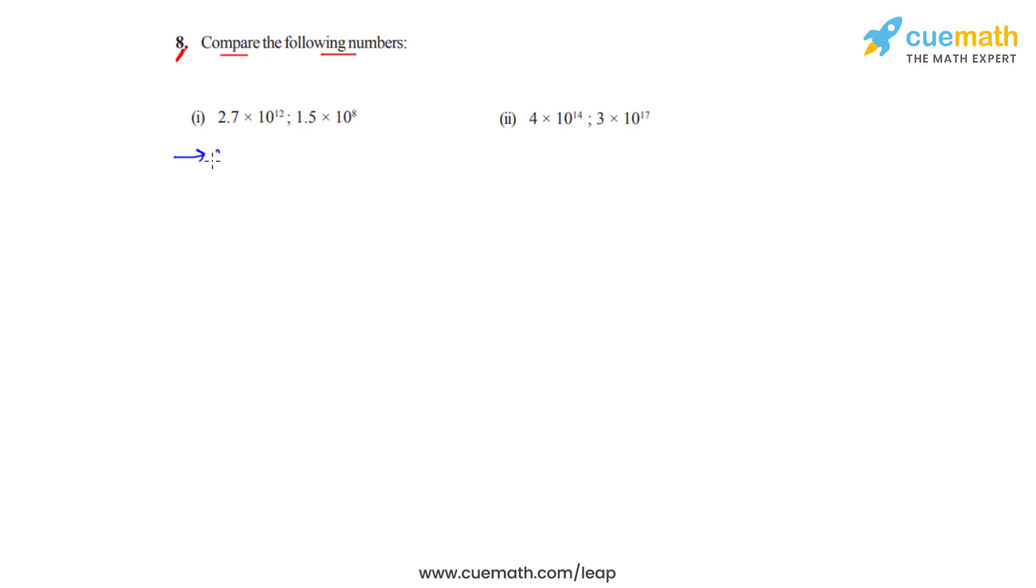In the first part we have 2.7 times 10 raised to 12. The power of 10 is a positive 12, so the decimal which is between 2 and 7 will move 12 places towards right. So we will basically get 27 followed by 11 zeros.